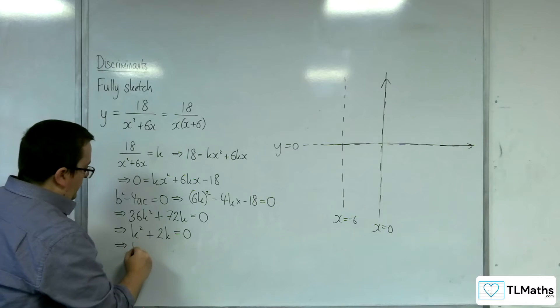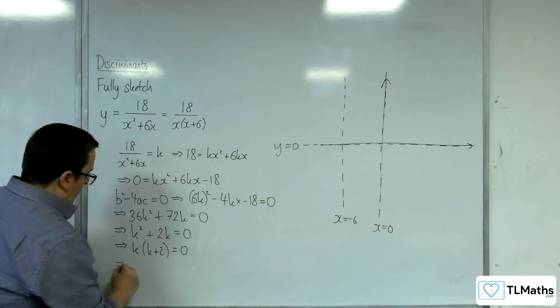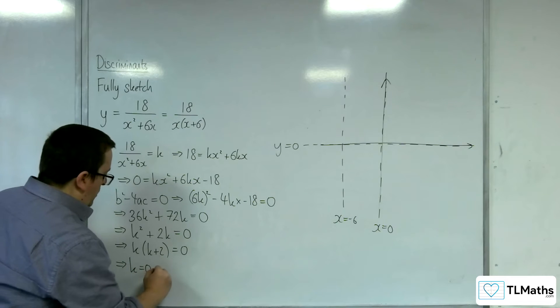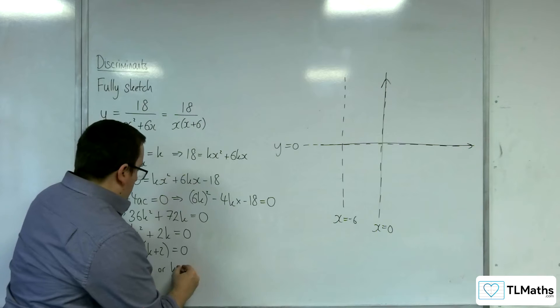So that factorises to k, k plus 2 equals 0. So either k is equal to 0, or k is equal to minus 2.